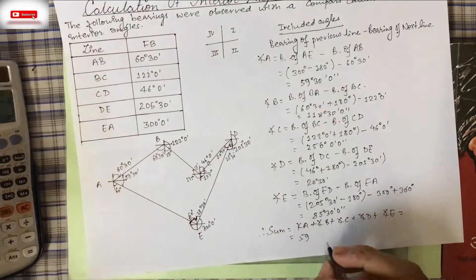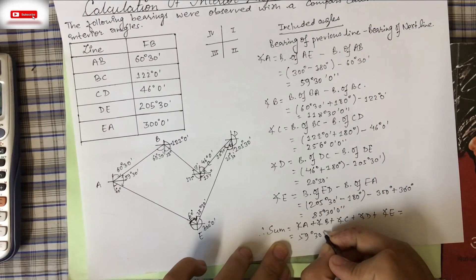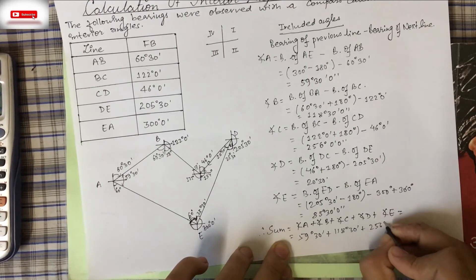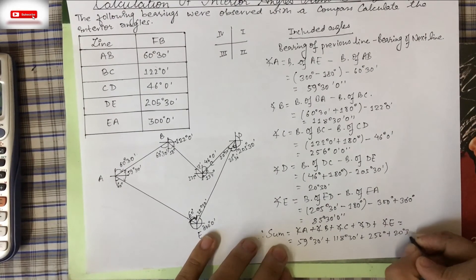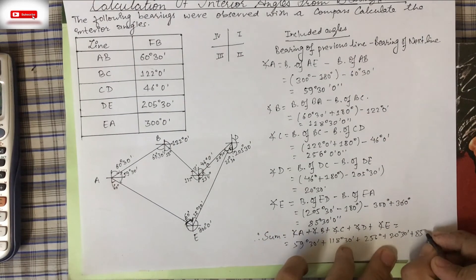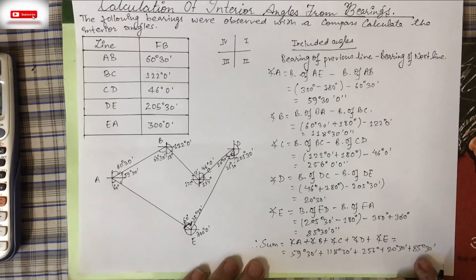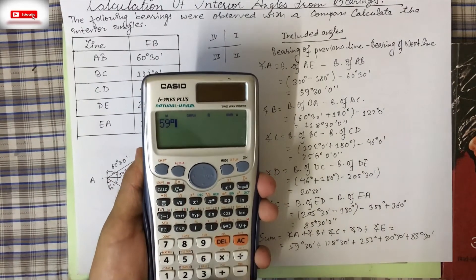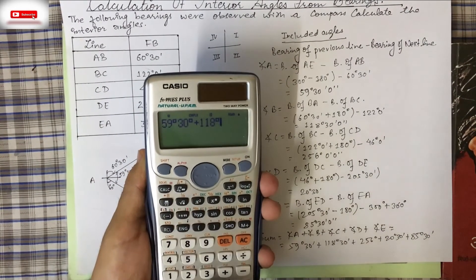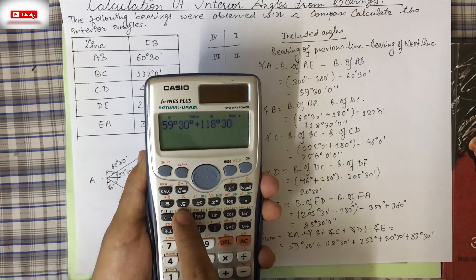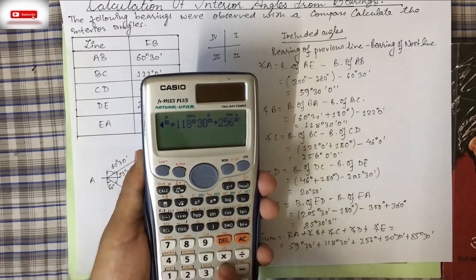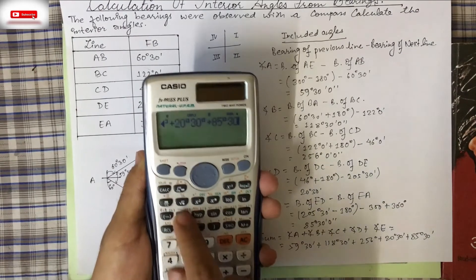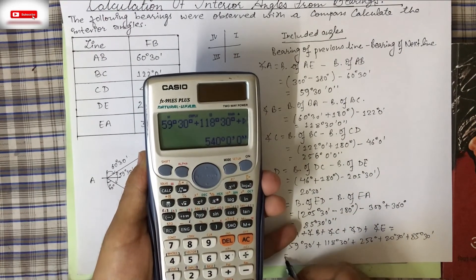Adding all the interior angles: 59°30' + 118°30' + 256°0' + 20°30' + 85°30' = 540°.